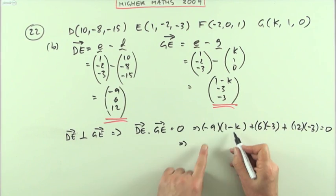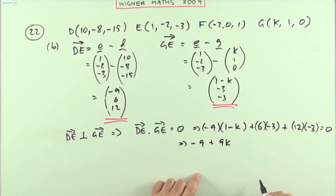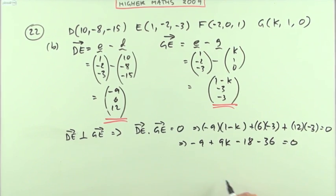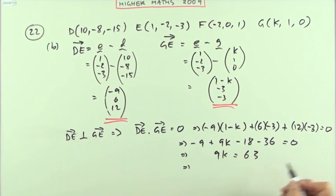That gives me -9 plus 9k minus 18 minus 36 should equal zero. I'll put all the numbers over to one side so I'm keeping 9k on this side. Notice we've got multiples of 9 there, they're all being subtracted. I've got 1, 2, 3, another 4 is 7, so that must be 63. It comes to positive on the other side. Dividing by 9, k is 7. Well, that was quite short for four marks. Why complain?